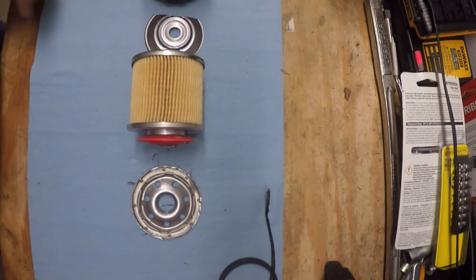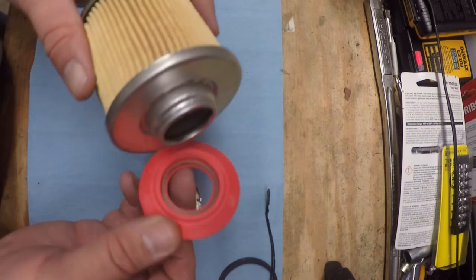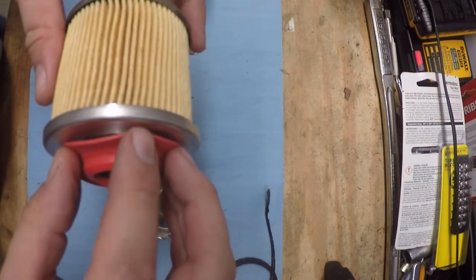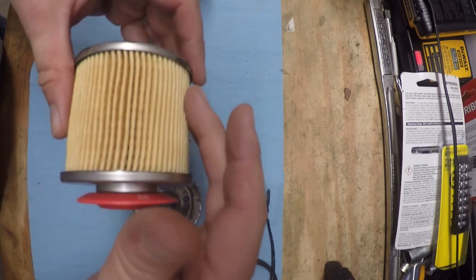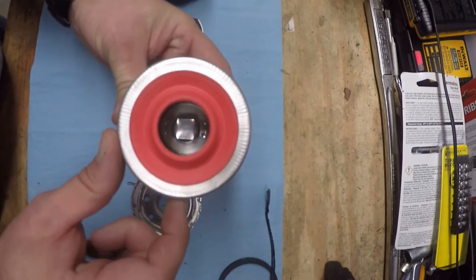All right, so now that we have it apart we can get a closer look at a couple of the parts inside. There's another look at that anti-drain back valve I was talking about earlier. So what happens here whenever the engine's running, that's pushed down, the oil flows out around the outside and through the filter element and then back out the center like I mentioned earlier.